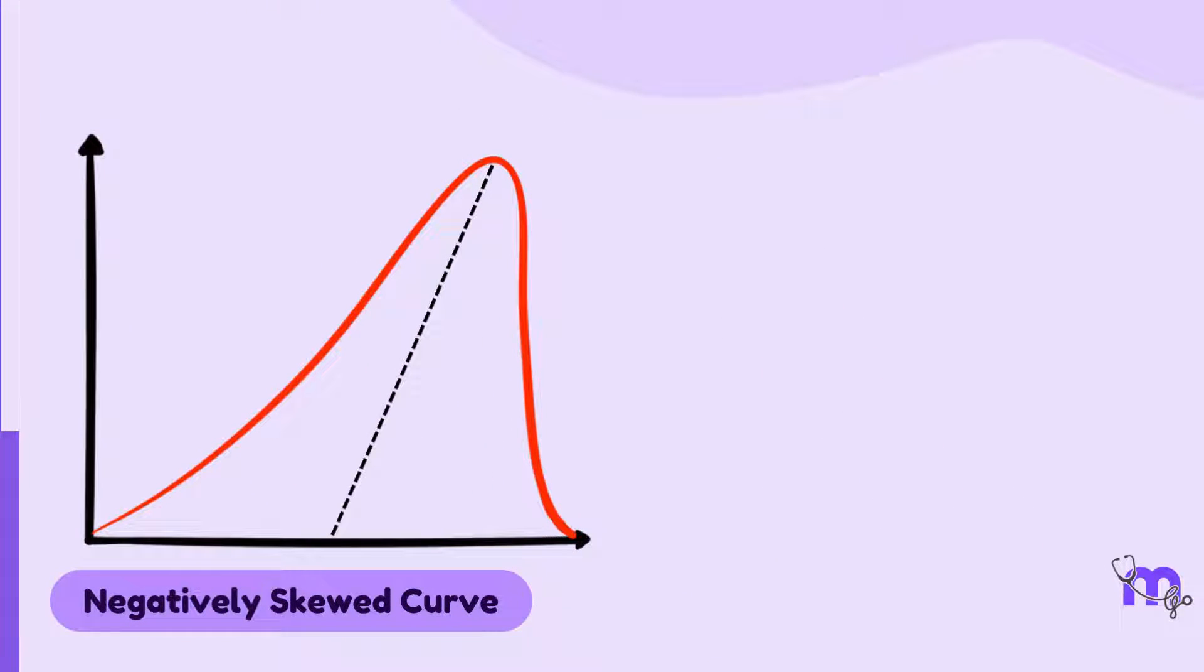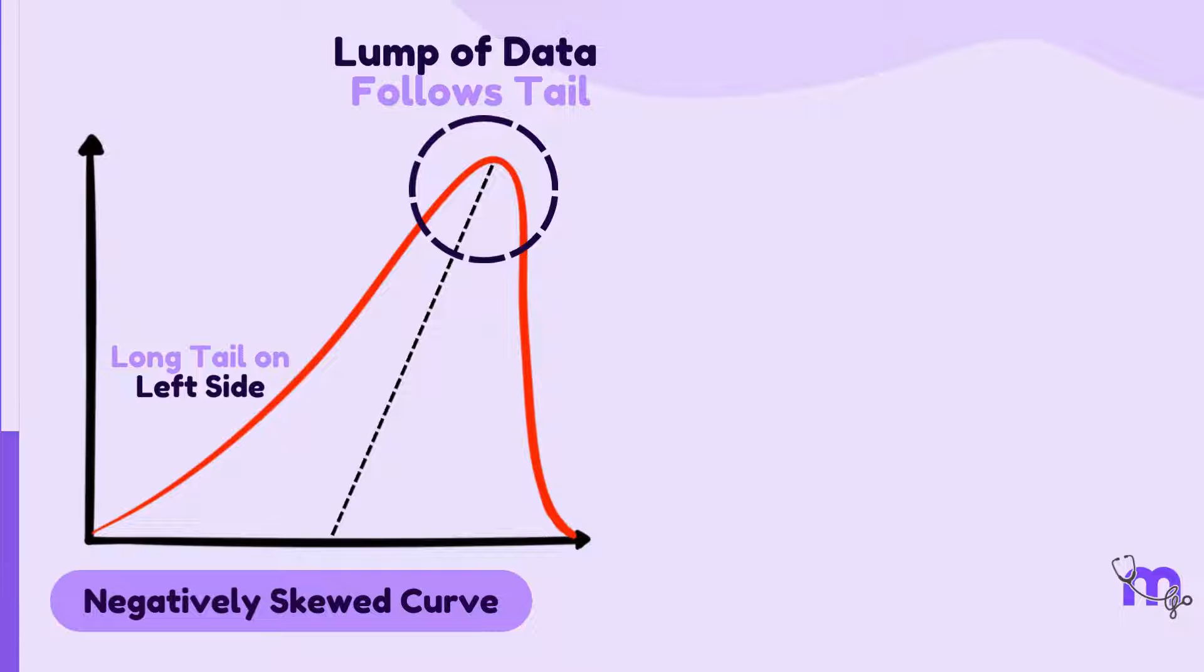A negatively skewed curve is characterized by a longer tail on the left side, with the majority of data concentrated on the right. This indicates that the distribution is pulled towards higher values and few extremely low values are present.